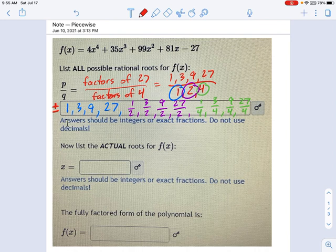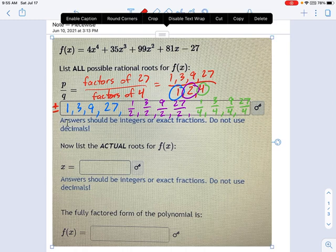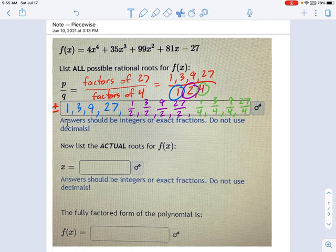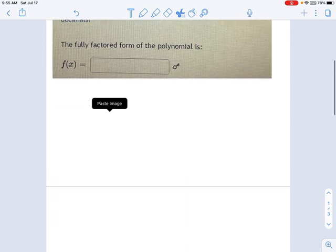So you're actually going to be entering like 24 answers in this box for all the possible roots. And now, which of those 24 possible roots are actual roots? Well, we're going to have to do some synthetic division to figure this out. So let me grab this guy. Come here. And we're going to come down here and start our synthetic division.